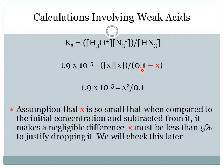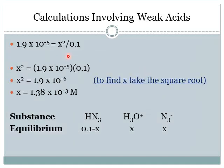The original concentration of HN₃ is 0.1 − X. We make the assumption that X is so small that subtracting it from 0.1 makes a negligible difference — this is justified if X is less than 5% of the initial concentration, which we'll verify with the percent ionization. Dropping X, the equation becomes 1.9 × 10⁻⁵ = X² / 0.1. Rearranging: X² = 1.9 × 10⁻⁵ × 0.1. Taking the square root gives X = 1.38 × 10⁻³ mol/L.